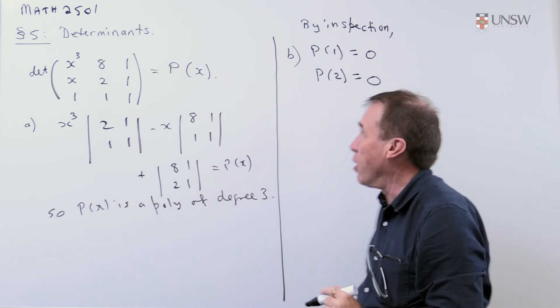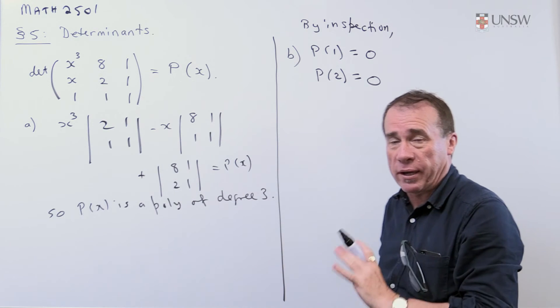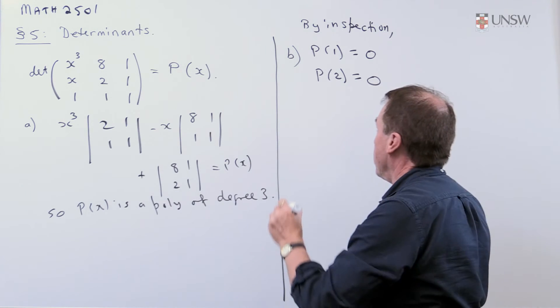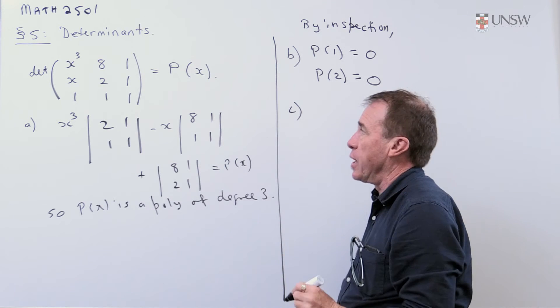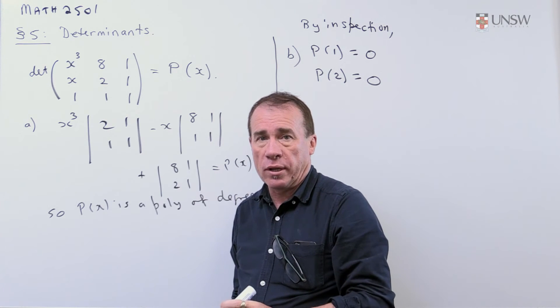So that's a nice phrase, by inspection, you just look at it, and you guess those two are going to be there. And the third part of the problem is now, well, factorize the polynomial completely.